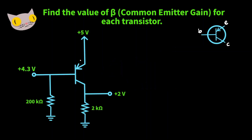Here's our first transistor circuit. In order to find the common emitter gain, beta, we need the collector current, I_C, over the base current, I_B.